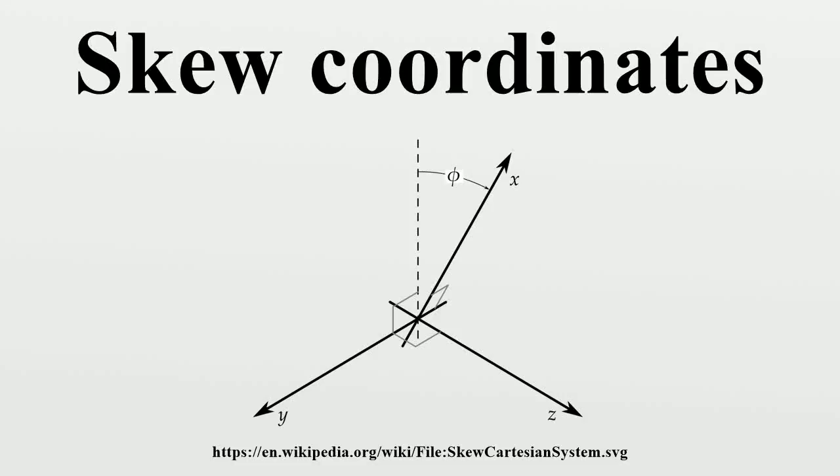A system of skew coordinates is a curvilinear coordinate system where the coordinate surfaces are not orthogonal. In contrast to orthogonal coordinates, skew coordinates tend to be more complicated to work with since the metric tensor will have non-zero off-diagonal components.